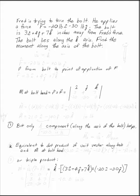Fred is trying to turn the bolt. The force that he pushes on is minus 20 pounds in the I direction and minus 30 pounds in the J direction.